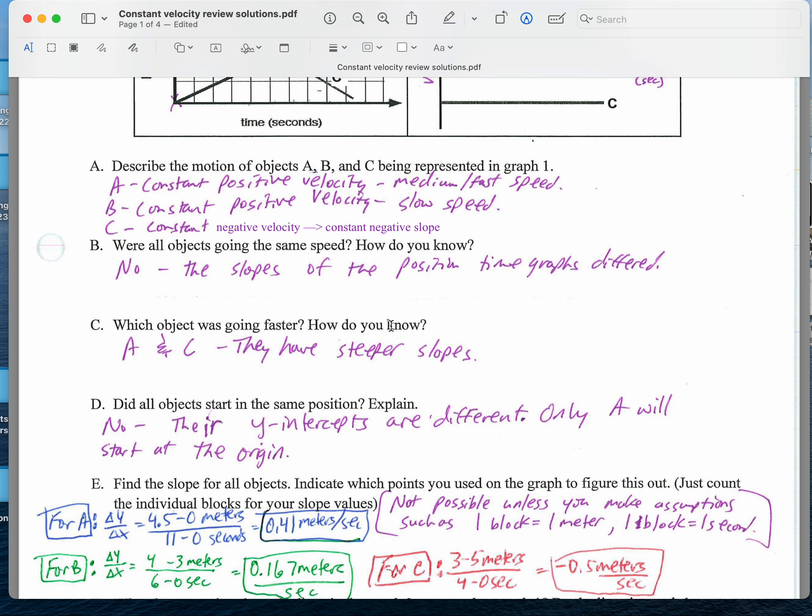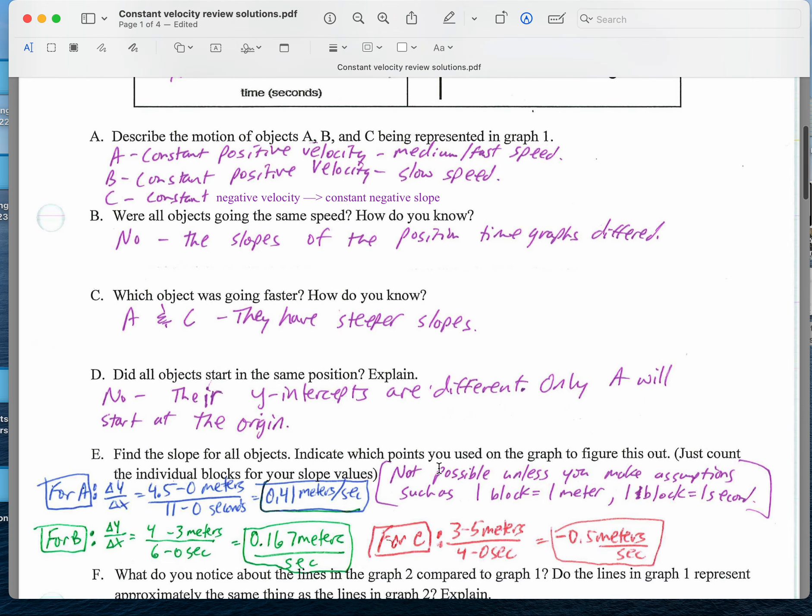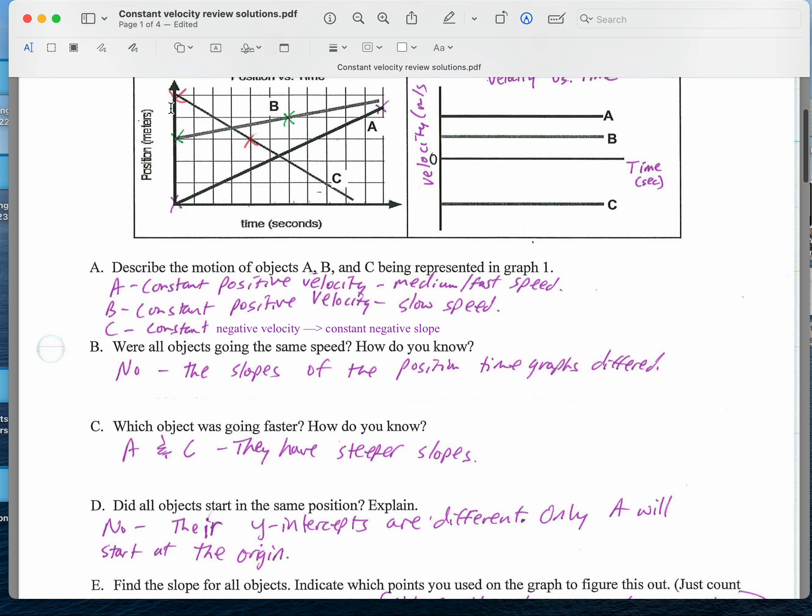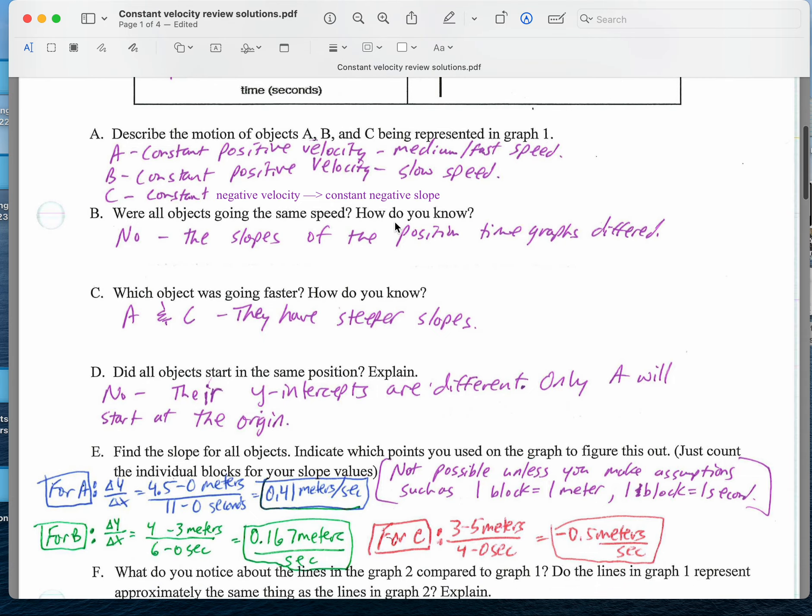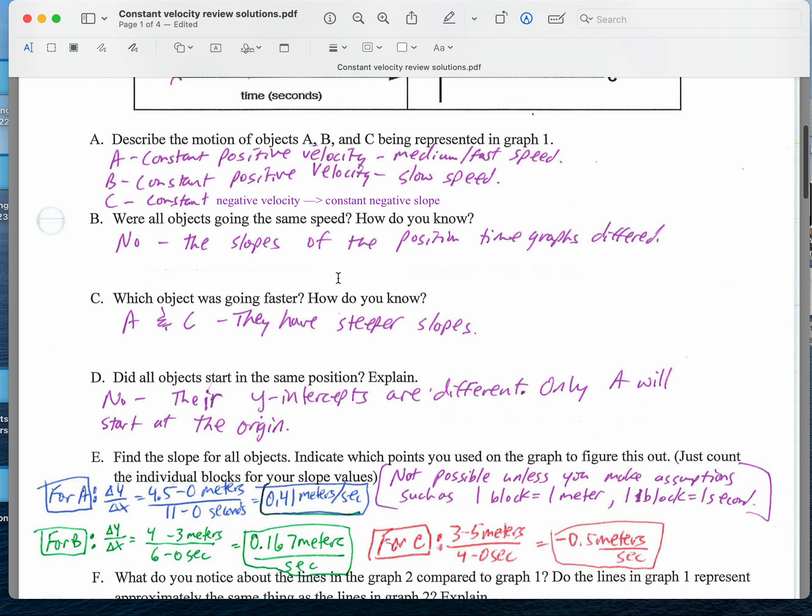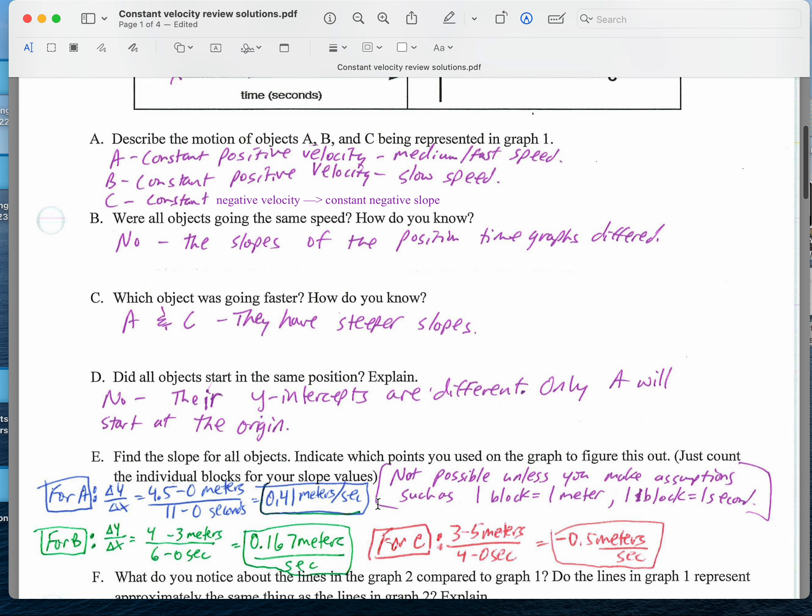If I want to find the slope for all objects, indicate which points you use in your graph, and just count the individual blocks for your slope values. I assumed every block this way was a meter, and every block this way was a second. So in this case for A, I ended up picking two points on the graph. I picked here and here. It looked like it was about 4.5 meters and 0 meters, and it took 1, 2, 3, 4, 5, 6, 7, 8, 9, 10, 11 seconds. So the slope of the graph is 4.5 meters over 11 seconds. That's about 0.41 meters per second.